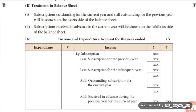Then add outstanding subscription for the current year — if there is any outstanding subscription, it should be added. Then again, add subscription received in advance during the previous year for the current year: if there is any amount of subscription received in the previous year that is meant for the current year, that amount should be added.